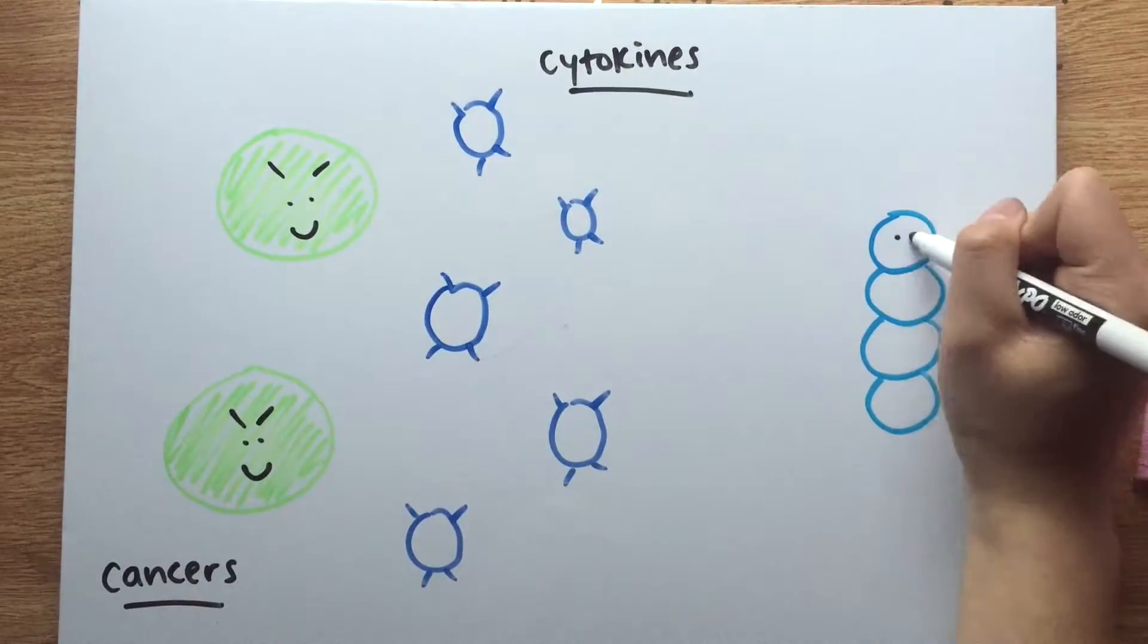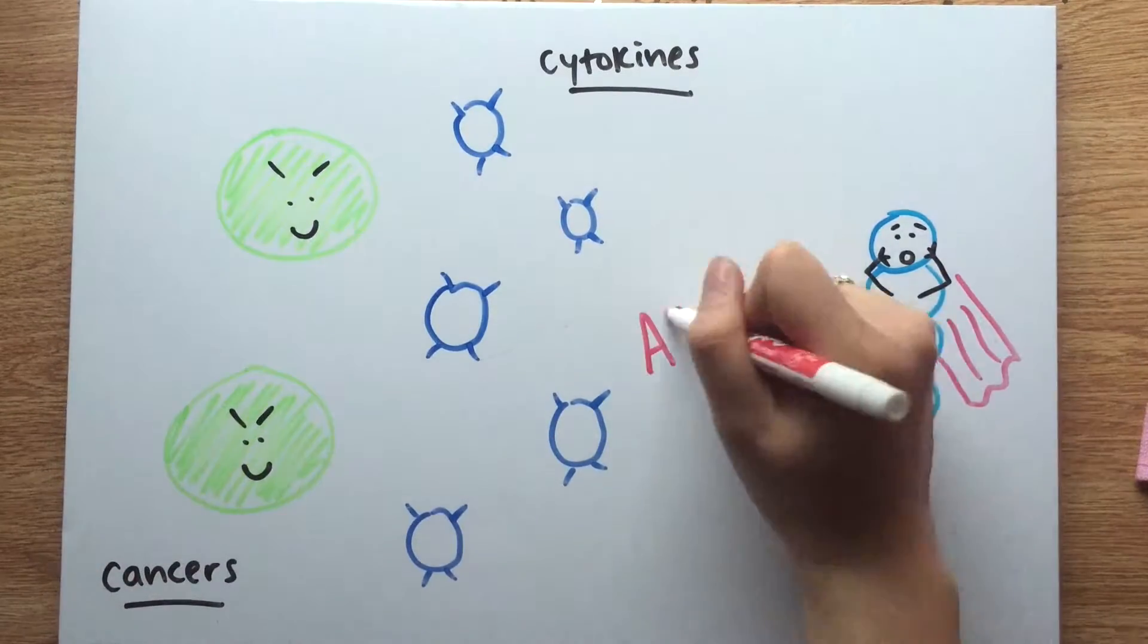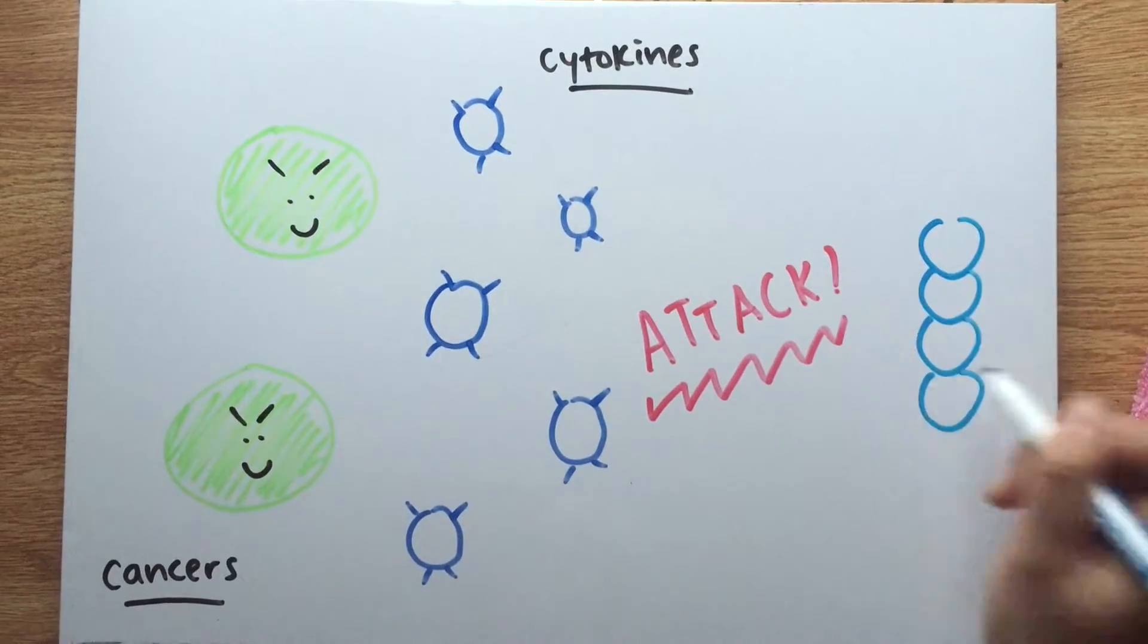Metastatic cancers release cytokines, which degenerate the glycocalyx and expose ligand receptors like e-selectin, leading to increased levels of cancer cell attachment.